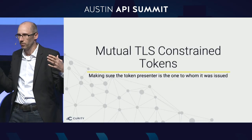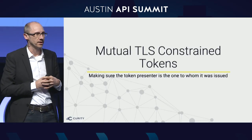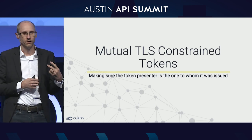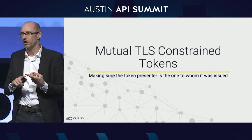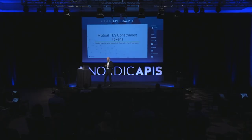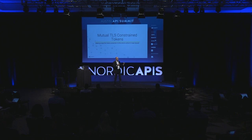So, mutual TLS constrained tokens. Before I bombard you with a bunch of mutual TLS stuff, let's talk about the two main vulnerabilities of OAuth: bearer tokens and the redirect. Those two things are the primary attack vectors in OAuth. Bearer tokens are like bearer bonds — like in the heist movies, the bank robberies, they're trying to get these bearer bonds worth a million dollars each piece of paper.